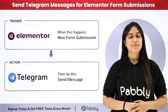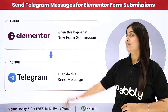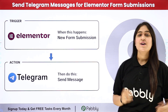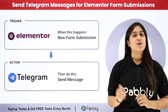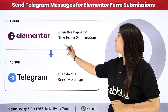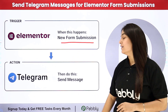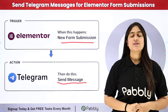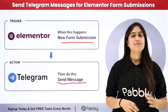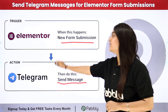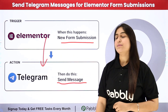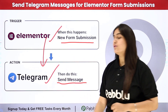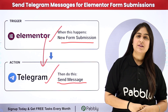Hello everyone, welcome back to Pabbly. In this video we are going to learn how to send Telegram messages for Elementor form submissions. Whenever a new form submission is made, automatically an alert message should be sent on my Telegram group. To automate this process we will use Pabbly Connect, connecting our trigger application Elementor and our action application Telegram.